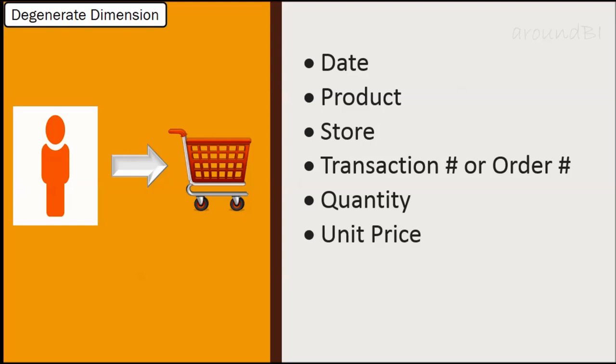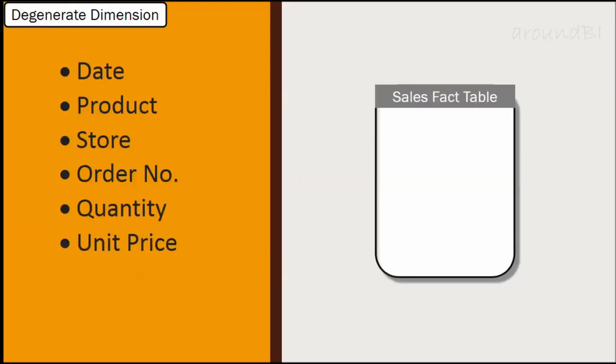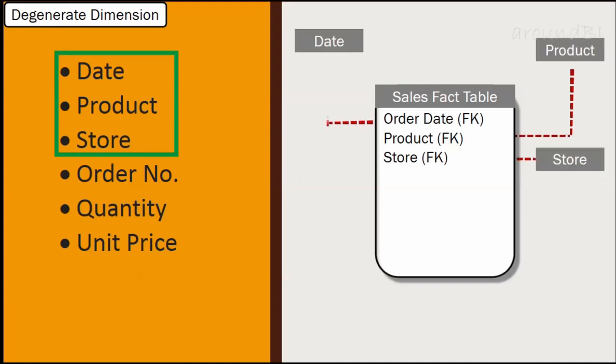If we construct our schema for this information, date key, product key, and store key will be stored in the fact table as foreign keys and will be joined with respective dimension tables.